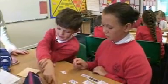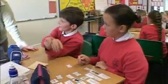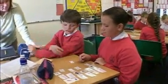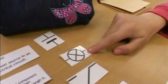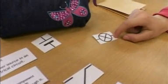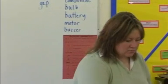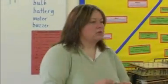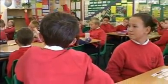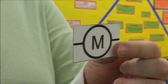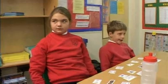Students identify a hazard with the bulb — it gets hot. The teacher then asks why she might use a symbol for a motor instead of drawing it. Emily suggests it's quicker, and the teacher agrees, asking for other reasons.